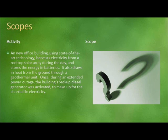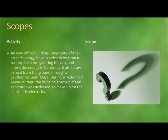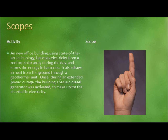In this final example, a new office building using state-of-the-art technology harvests electricity from a rooftop solar array during the day and stores the energy in batteries. It also draws in heat from the ground through a geothermal unit. Once, during an extended power outage, the building's backup diesel generator was activated to make up for the shortfall in electricity. Is this generator an example of scope 1, scope 2, or scope 3 emissions? The correct answer is scope 1. Diesel is being burned by the organization at the site itself.